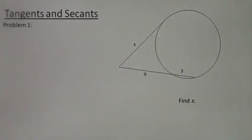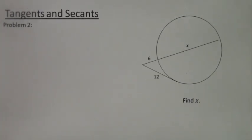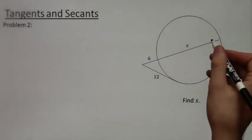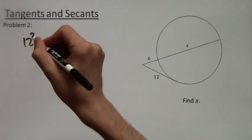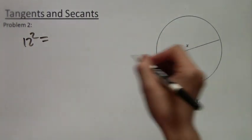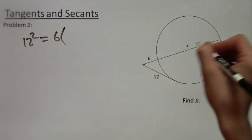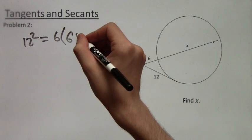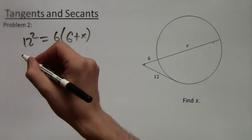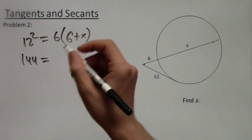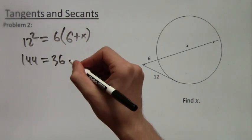Alright, find x. So we do the same thing as before. We just apply the theorem. We get 12 squared equals 6 times 6 plus x. Now we just solve. 144 equals 6 times 6 is 36, and then we have 6x.